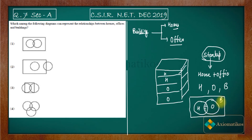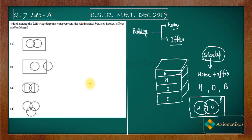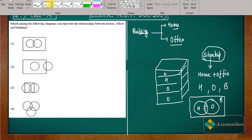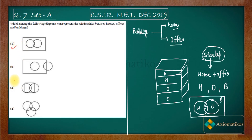In this relation, building is the universal set, and houses and offices are inside that universal set, with an intersection between them. According to this, option A is correct, and I can discard all remaining options because I have found a valid relation for this diagram.